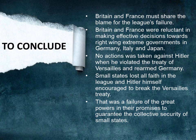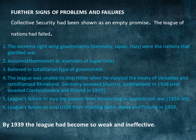This was also a great failure of the great powers and their promise to guarantee collective security to small states, as the League was supposed to protect the sovereignty, territorial independence, and political independence of smaller nations. The League failed in achieving these aims. Collective security had been shown as an empty promise. Italy, Japan, and Germany were alike in that their leaders glorified war.